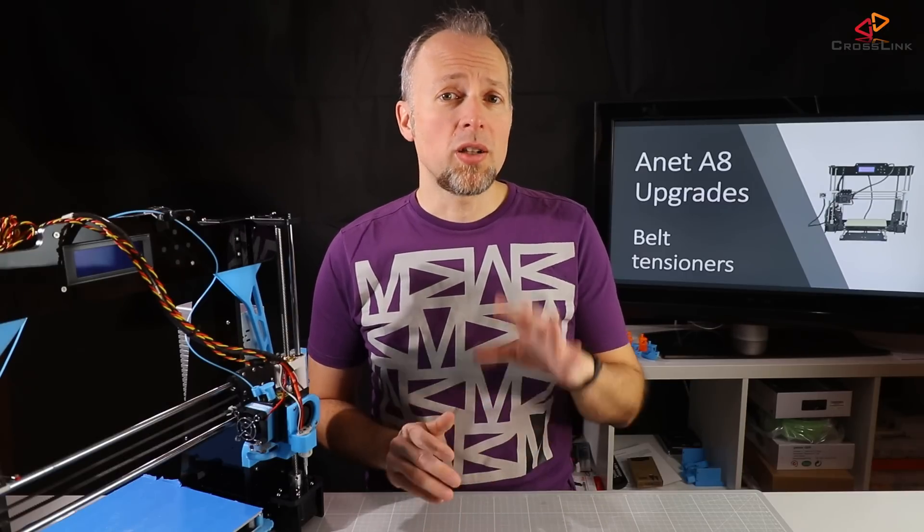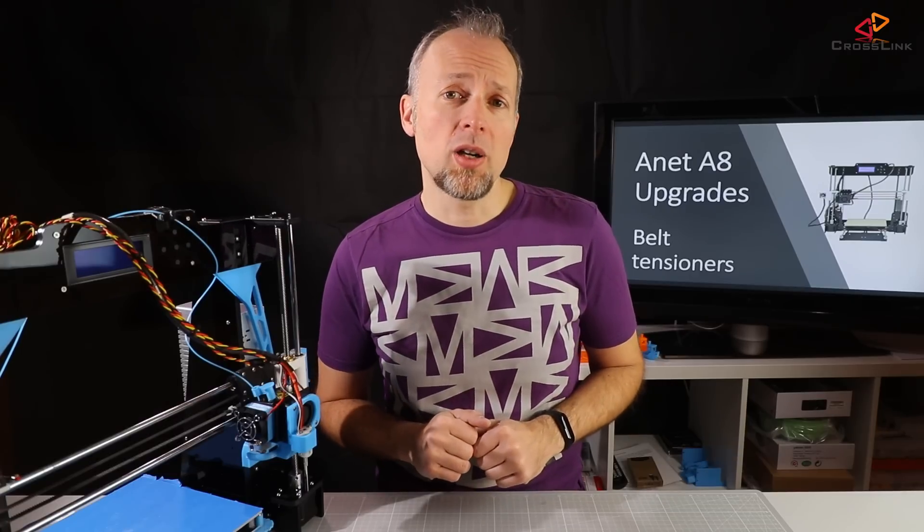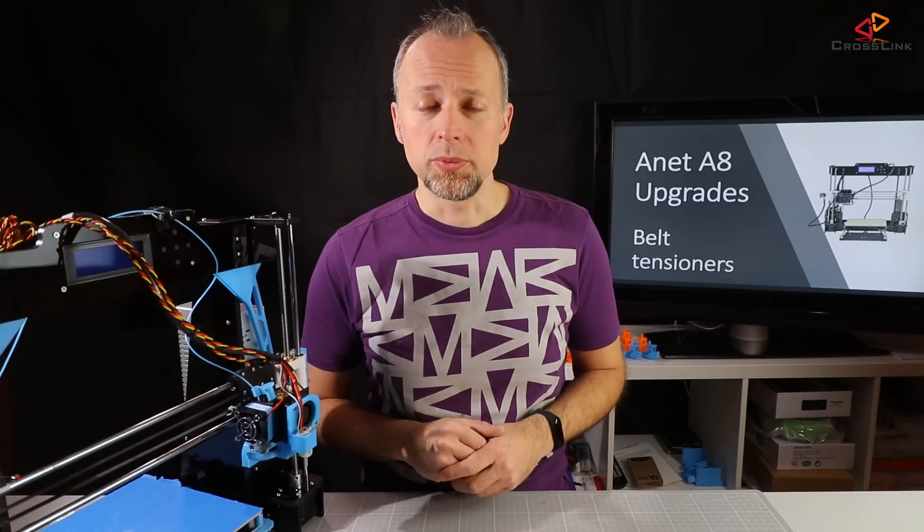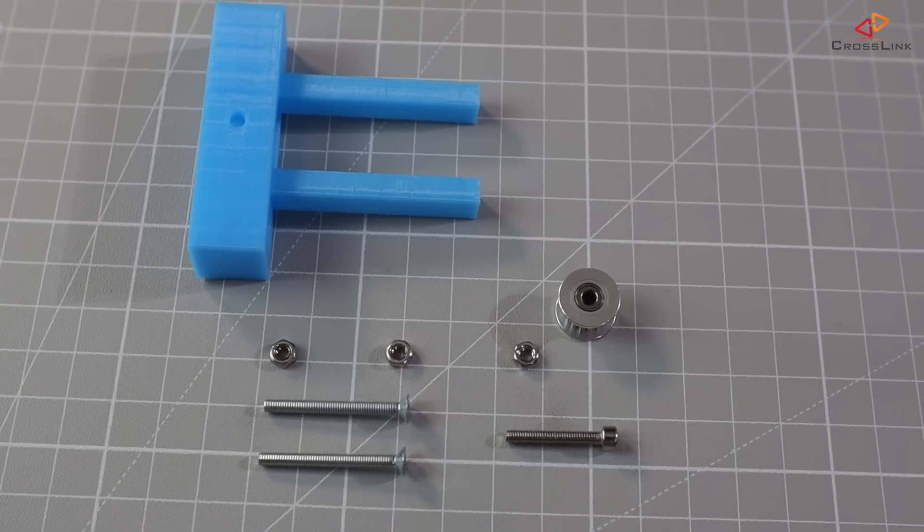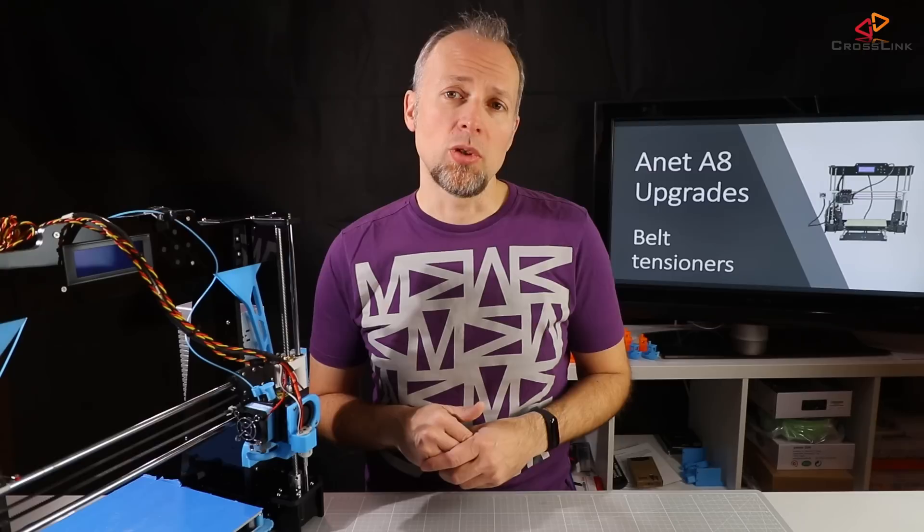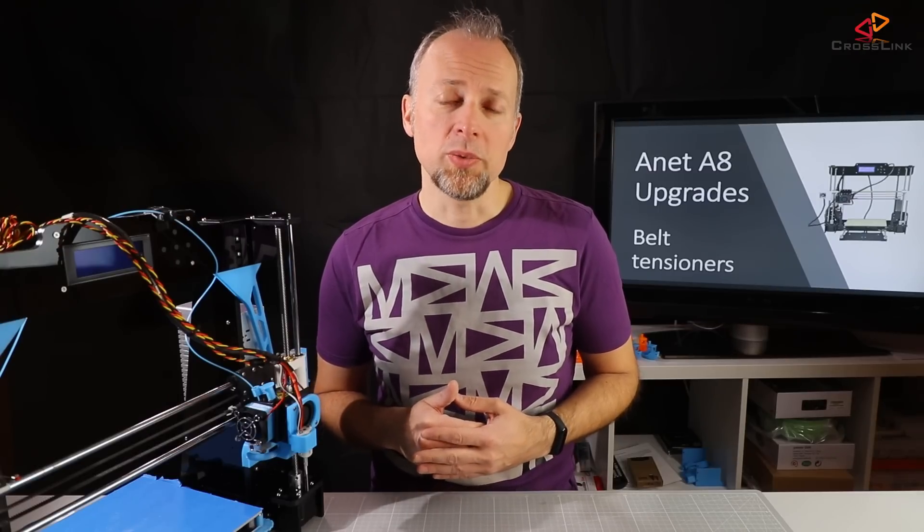First, what we have to print out are the parts from Thingiverse. I've put the links for both the printable parts as well as the belts and pulleys in the description down below. Additionally, you will need some screws and nuts. Some come with the printer, some you need to get from the hardware store. A detailed list is also in the description of this video.